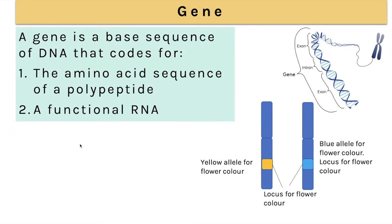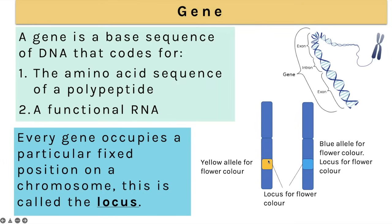A gene is a sequence of DNA and it codes for the amino acid sequence for a particular polypeptide and also a functional RNA — so it codes for an mRNA molecule. An important key term is locus: the exact position that one particular gene is found on a chromosome. Locus is location — that's the way to remember it.